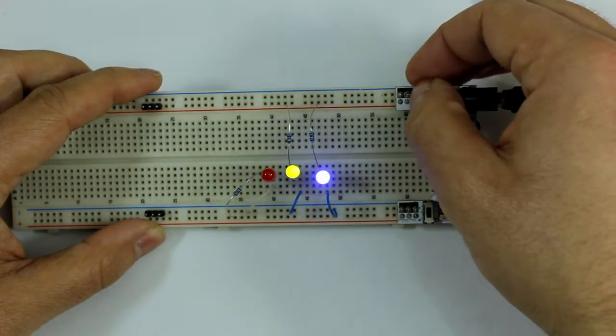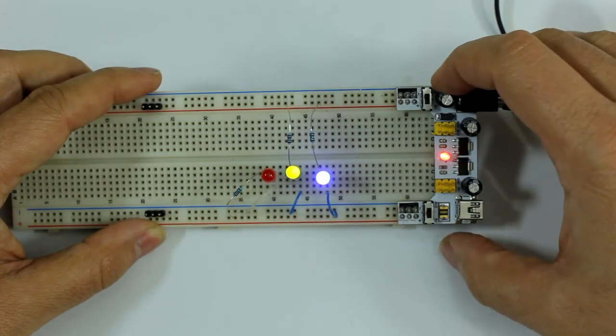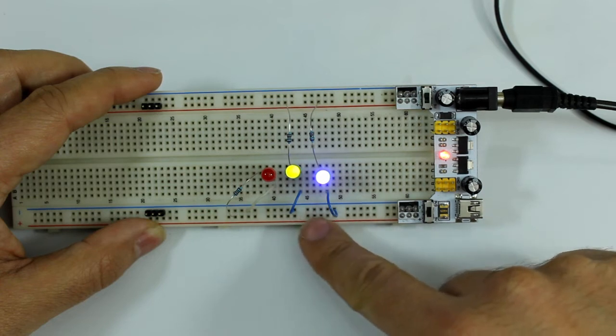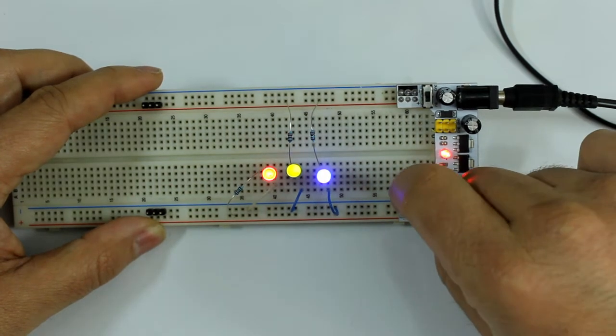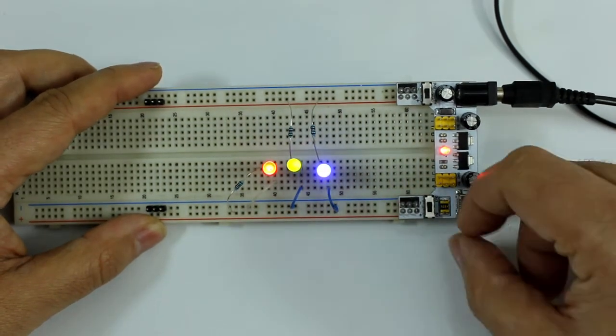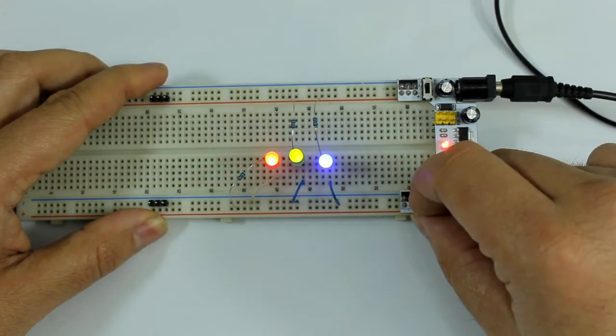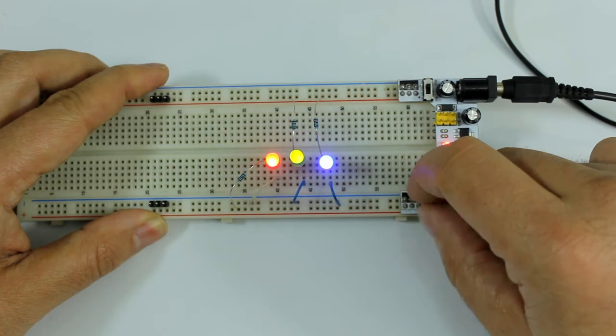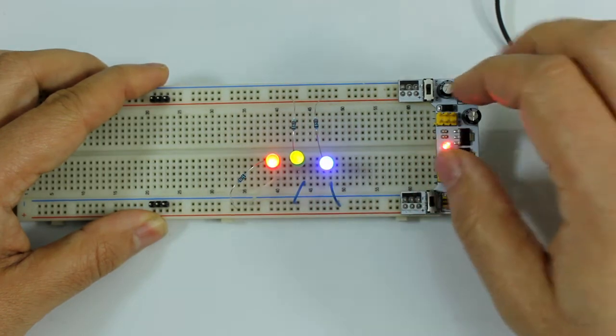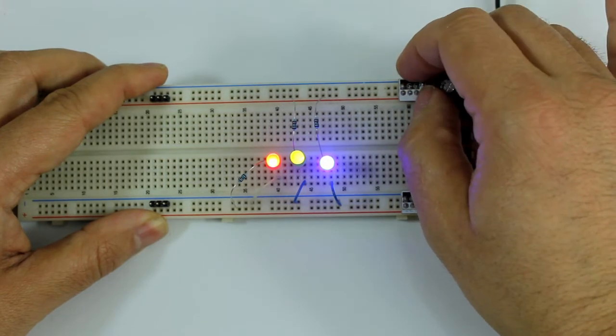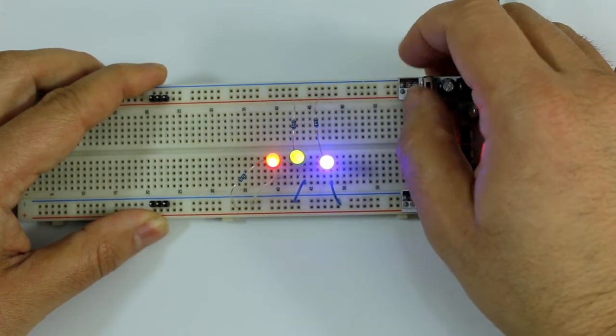We can now turn it to 3.3 volts. I have these two, and in the bottom line I can have 3.3 volts. I can switch to 5 volts, as you can see the brightness of the LED changes. And the other line, the same. I can change the voltage very easily.